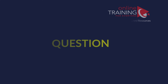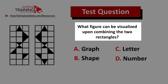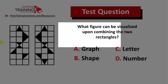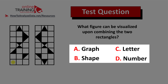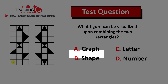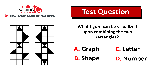Let me share a tricky question from the test — I have confidence you might figure out the answer. What figure can be visualized upon combining the two rectangles? You have two rectangles on the left, both seven by three, and four different choices: Choice A, graph; Choice B, shape; Choice C, letter; Choice D, number. See if you can pause this video for 10 to 15 seconds to figure out the answer.